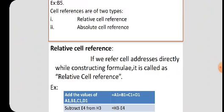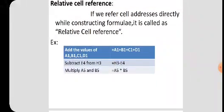What is relative cell reference? If we refer to cell addresses directly while constructing the formula, it is called a relative cell reference. For example, to add the values of A1, B1, C1, D1, you give the formula: equal to A1 plus B1 plus C1 plus D1. Similarly, to multiply A5 and B5, the formula is equal to A5 star B5.